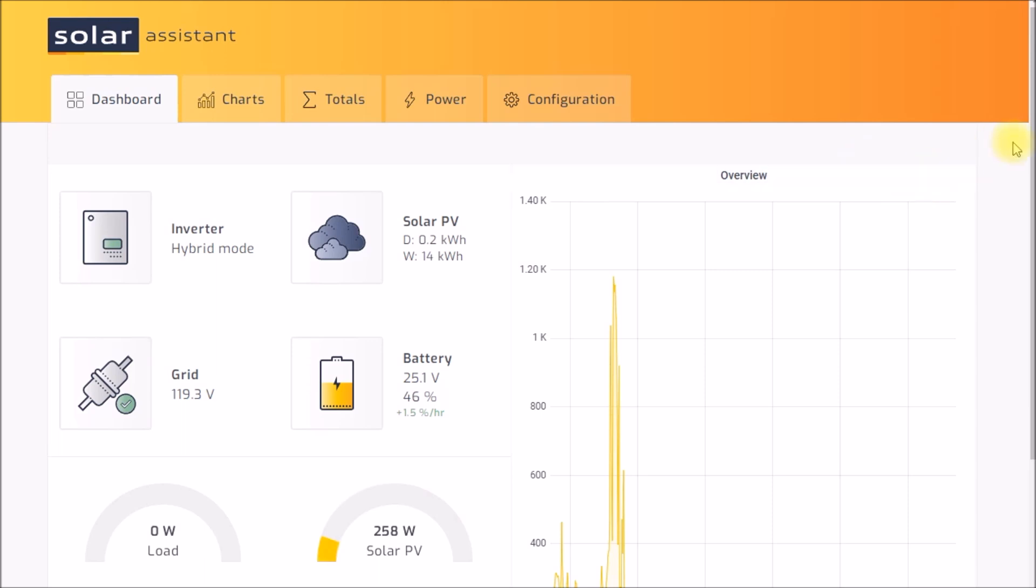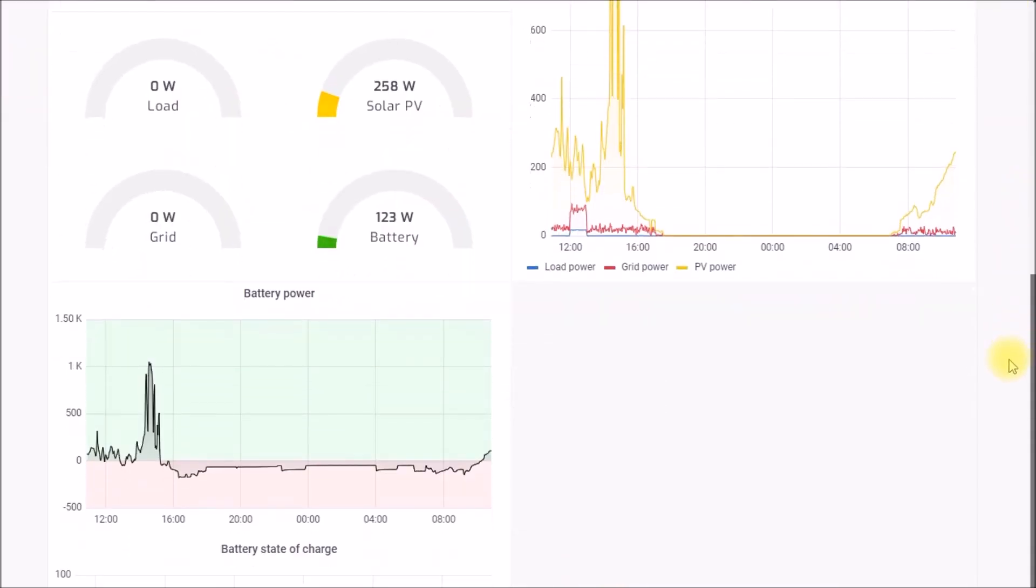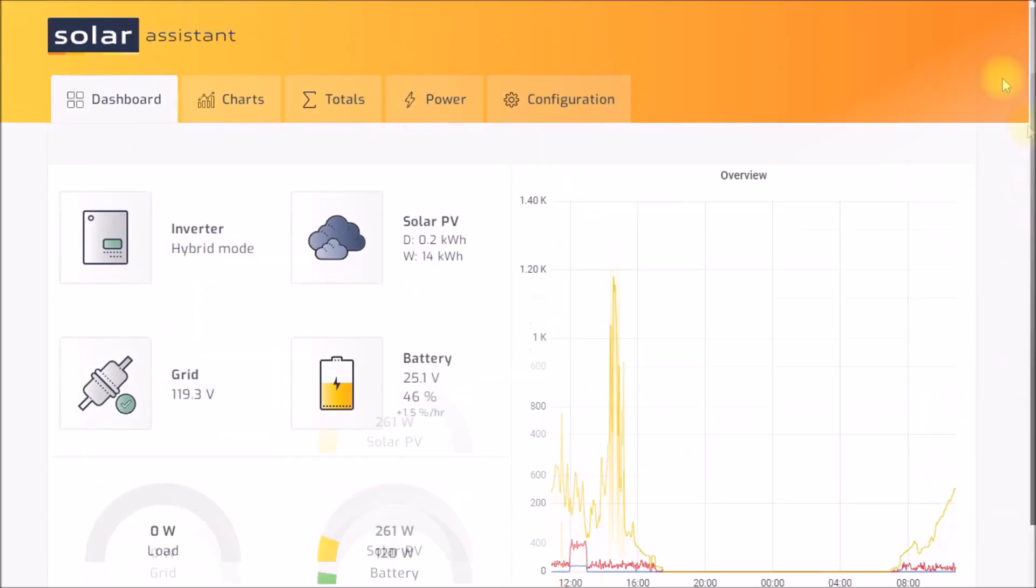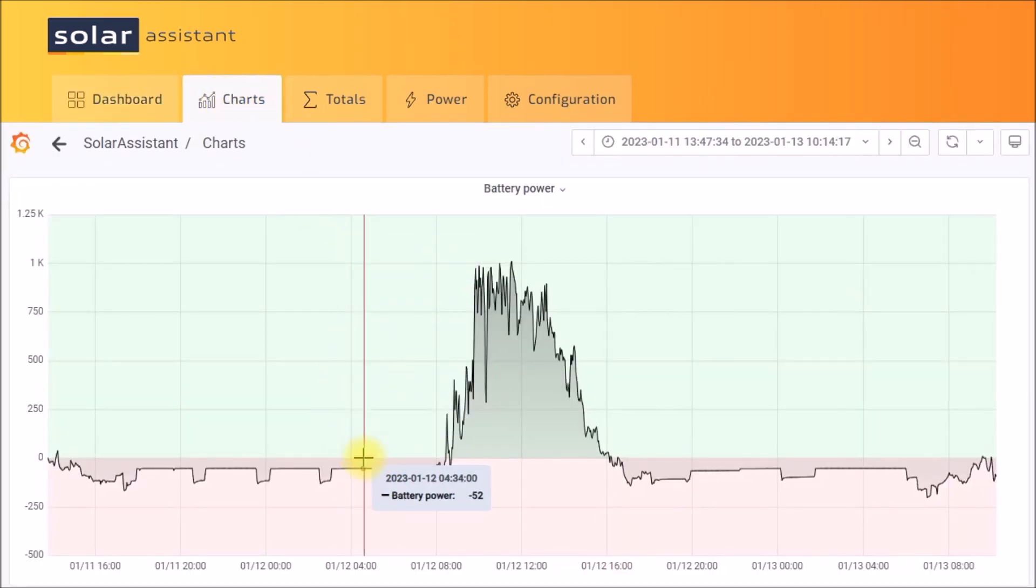I wanted to show you how I collected the data that I used to compute the energy consumption with the different RPMs. This is my Solar Assistant dashboard screen here. Down here is the battery power but if you come over here to the charts tab I've zoomed in on the day before and the day after I changed the RPM on the compressor. This was the day before running at the 2600 RPM setting. On this screen the pink is power flowing out of the battery, green is power flowing into the battery.